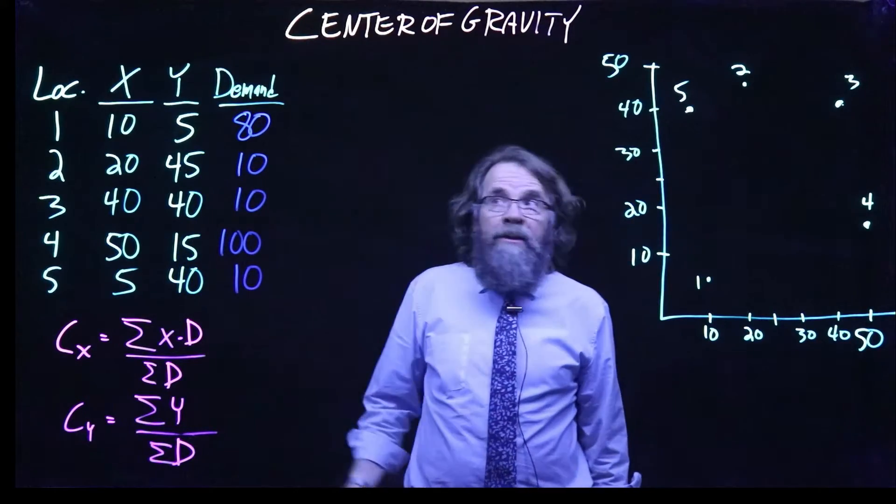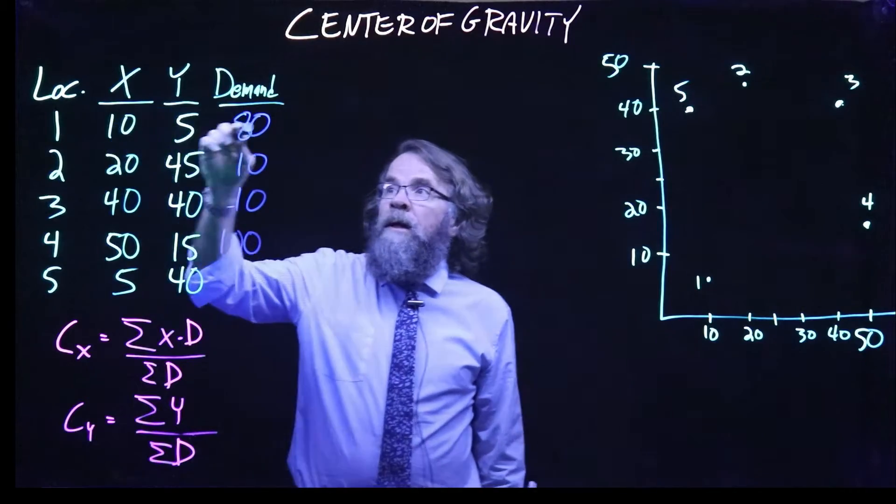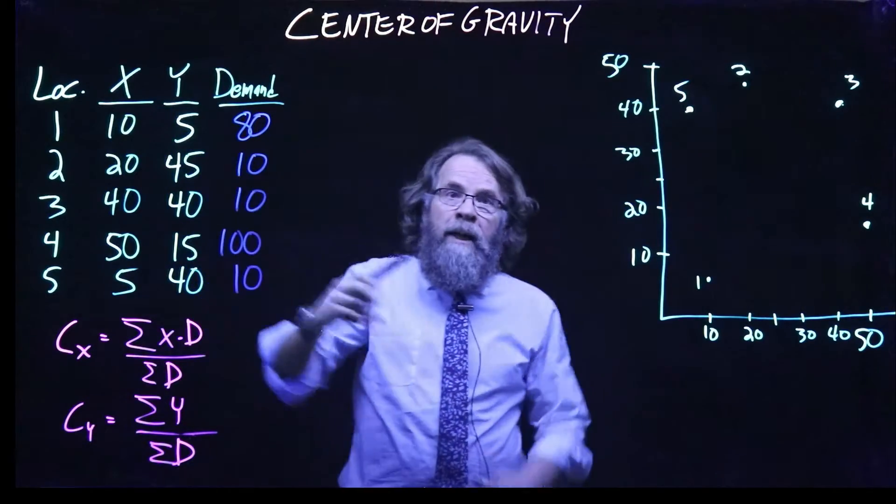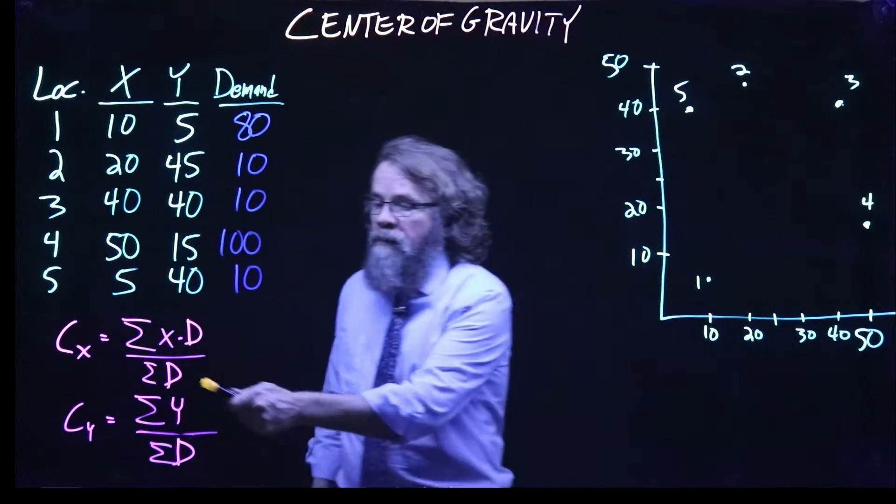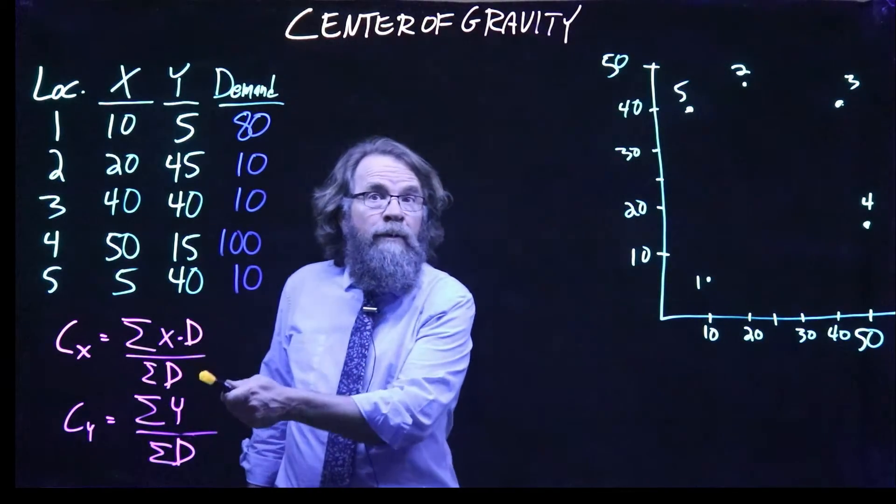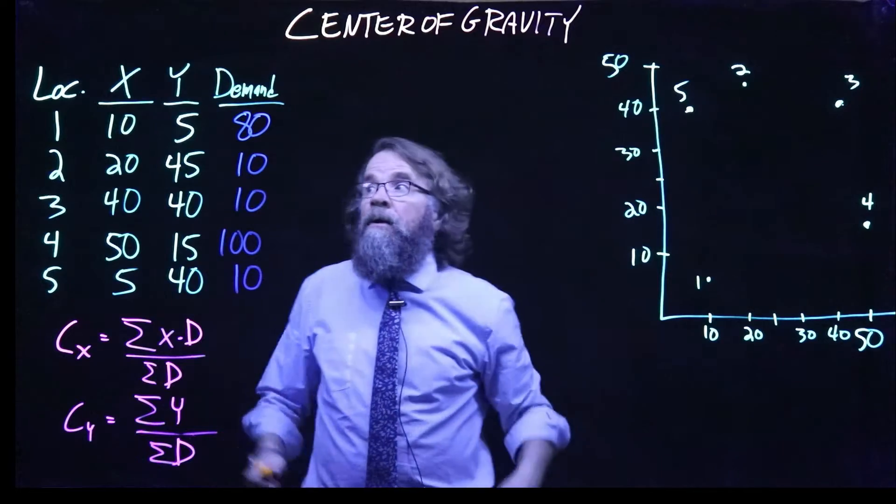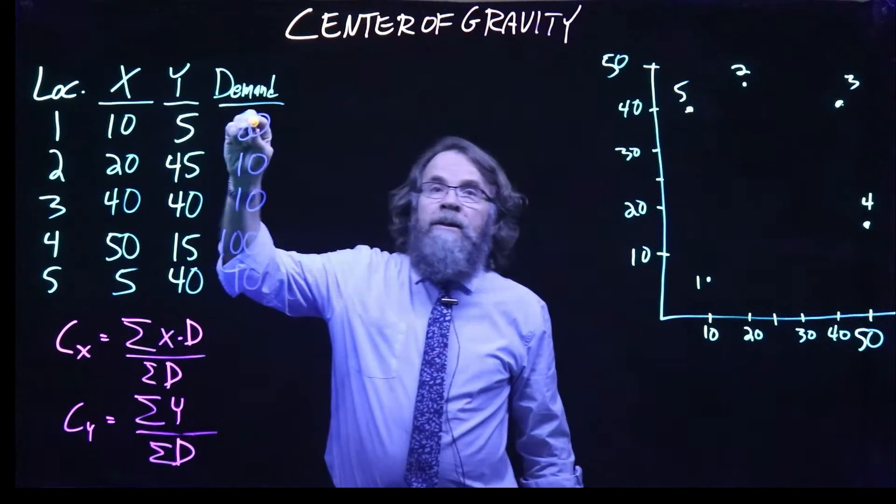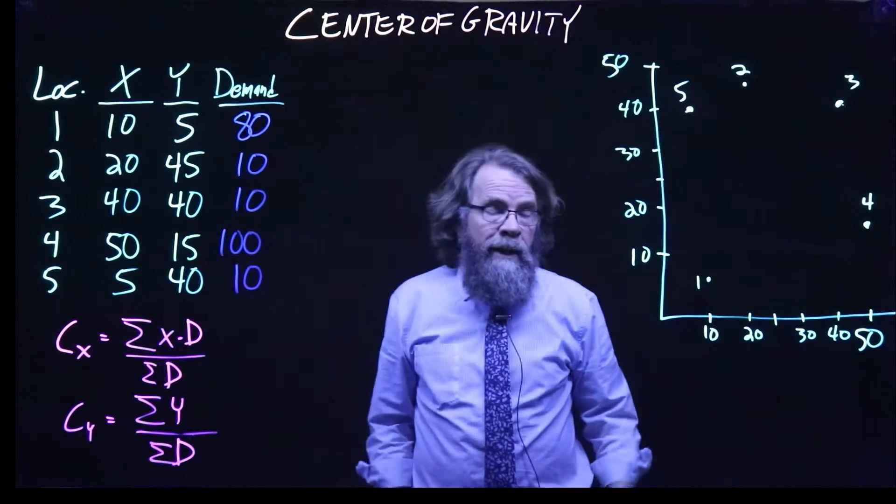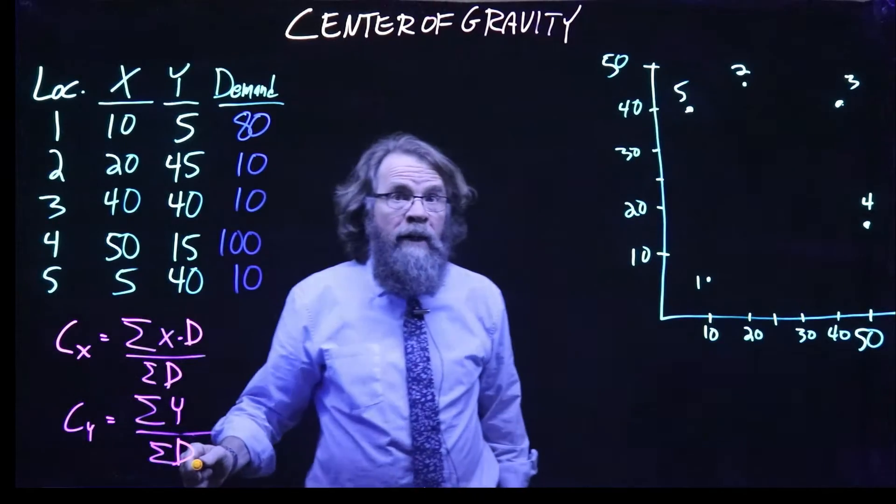The process is really pretty simple. Take the X coordinate times the demand, add those all up, and divide by the sum of the demands. That gives you the X coordinate for our answer. To get the Y coordinate, take the Y coordinate of each location times the demand, add them up, and divide by the sum of the demands.